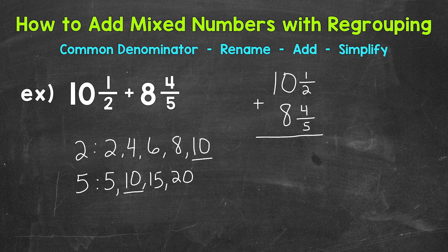So let's start with 10 and a half. So this is going to equal 10. We don't need to do anything with the whole number. That stays the same. We're just renaming the fractional part. So our denominator is going to be 10. Let's use equivalent fractions here to rename.